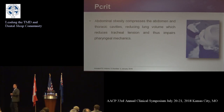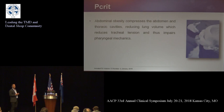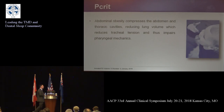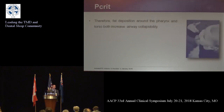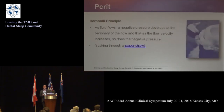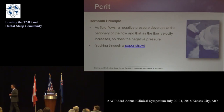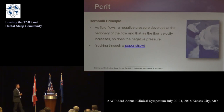People who are obese tend to breathe faster and harder. As you breathe faster and harder, you increase the negative pressure — and again, back to the collapsible paper straw. You want to be breathing softly through that straw, not causing collapse. Fat deposition around the pharynx and torso increases airway collapse. This is based on the Bernoulli principle: as fluid flows, negative pressure develops, and as flow velocity increases, so does the negative pressure — that's the collapsible paper straw.